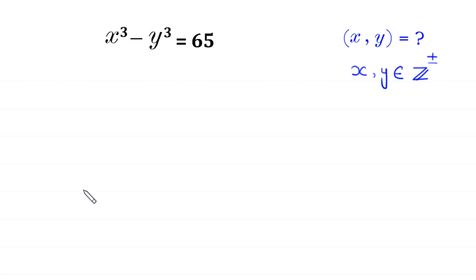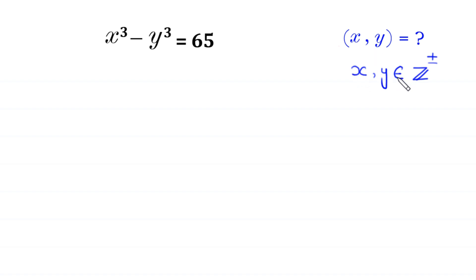Hello, welcome to how to solve this very nice algebra equation. x cubed minus y cubed is equal to 65. We need to find all possible values of x and y, where x and y are integers, both positive and negative. So, let us start.